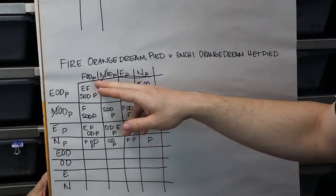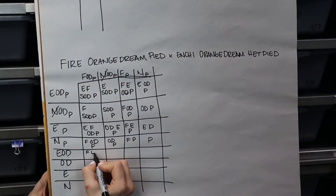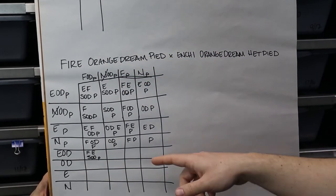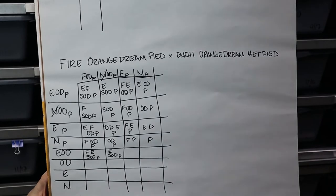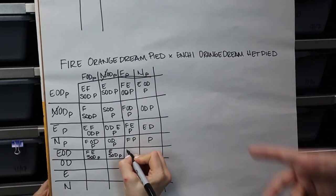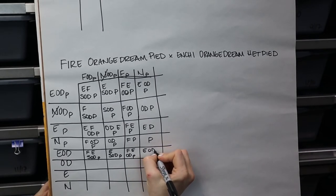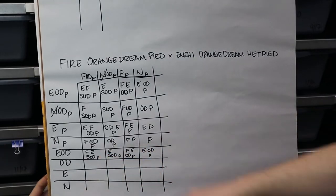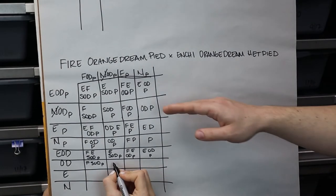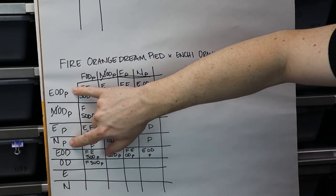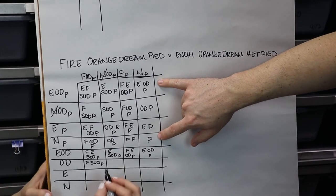Now here's where we start creating some hets — we don't have a second pied gene anymore down here. So this is going to be a fire enchi super orange dream het pied — little 'p,' only one copy of it. Over here we have an enchi super orange dream het pied. Then a fire enchi orange dream het pied. Because of the way we built this, these are the exact same as the visual pied boxes above, except these all have just one pied gene — so basically you can duplicate all those boxes but they're all het pieds.